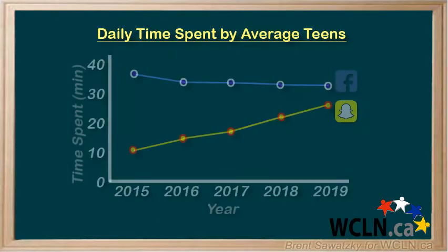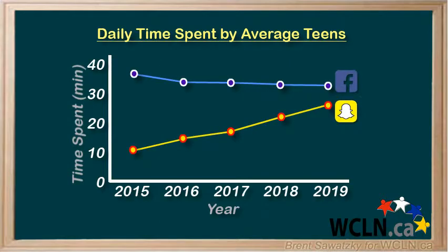And sure enough, we could talk about the trend where we might see the breakdown changing over time. The Snapchat portion of the pie will likely grow over the next year, while the Facebook portion will likely shrink, based on the trends shown in our line graph.